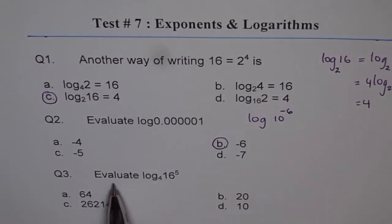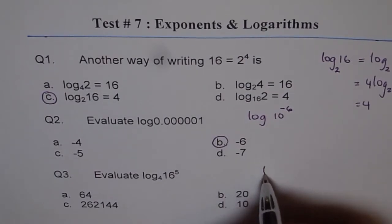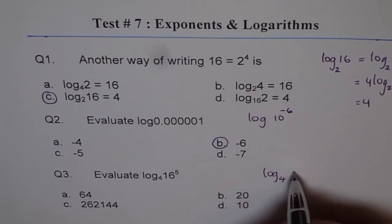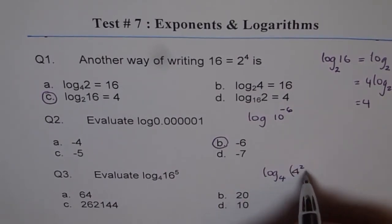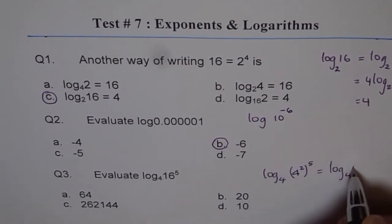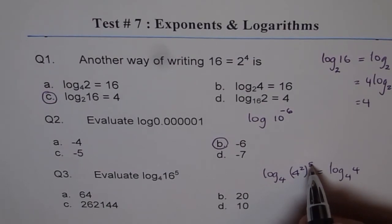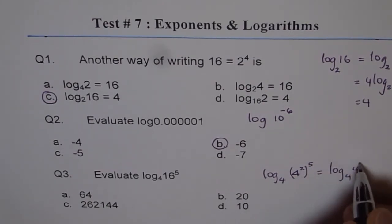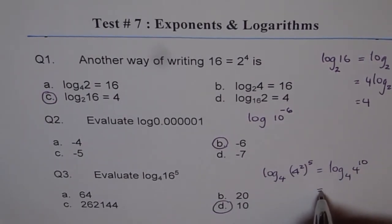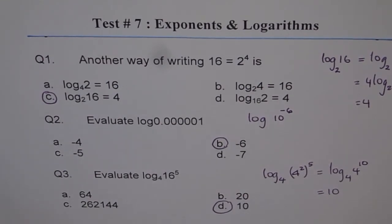Question 3. Log to the base 4 of 16 to the power of 5. We can write this as log to the base 4 - 16 in terms of 4 is 4 squared. So 4 squared to the power of 5. That means we can write this as log to the base 4 of 4 to the power of 10, since 5 times 2 is 10. And therefore, the solution is 10. So that is how you find the answers.